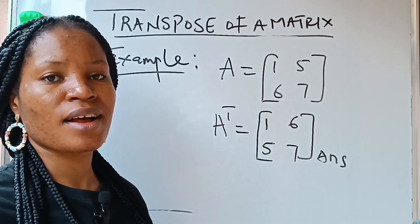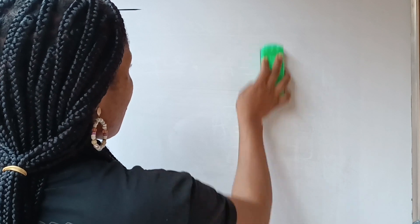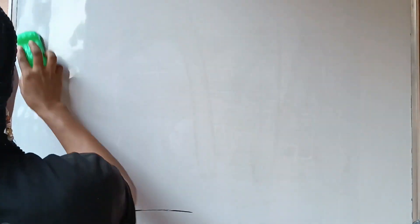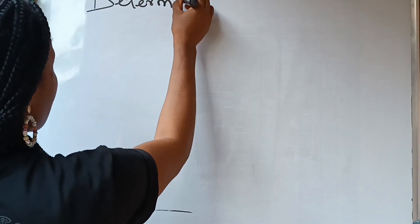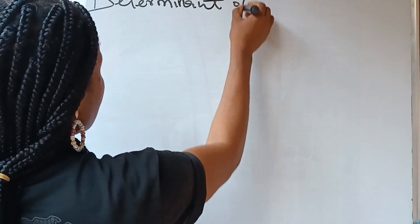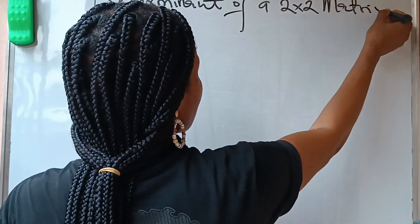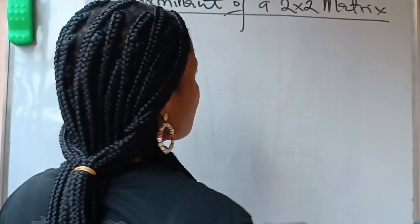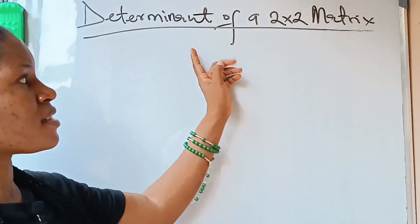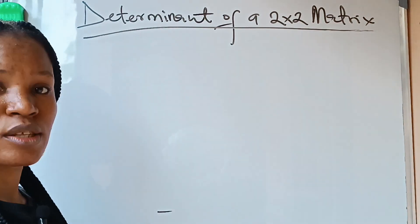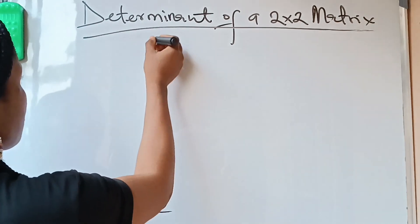Let's get to determinant of a matrix. We will start with a 2 by 2. Determinant of a 2 by 2 matrix is very easy to get. We start with 2 by 2 because it is different from the determinant of a 3 by 3 matrix. To get the determinant of a 2 by 2 matrix is easy.